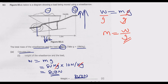At equilibrium, the clockwise moments equal the anticlockwise moments. When we sum all the moments upward, they must equal the moments downward. If we are able to lift the wheelbarrow, we are at equilibrium. The principle of moments states that the moments on both sides must be equal.